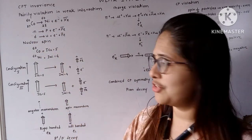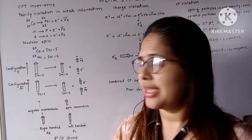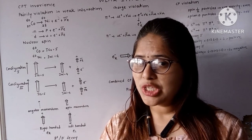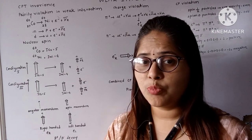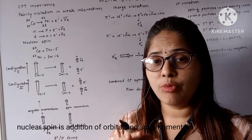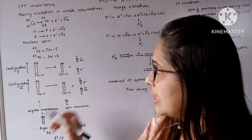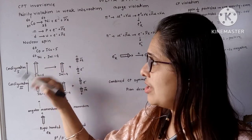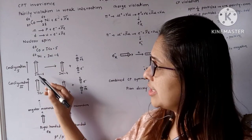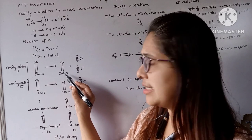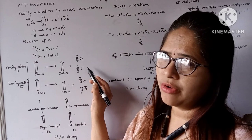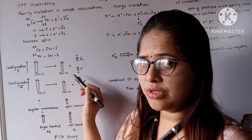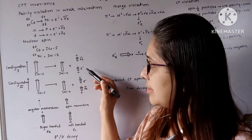This process can be considered as the neutron converting itself to a proton by giving out an electron and electron neutrino, or as the down quark converting to the up quark. Now, nuclear spin corresponds to the total orbital angular momentum of the nucleus. Experimentally, Co-60 has a nuclear spin of 5, whereas Ni-60 has a nuclear spin of 4. The electron and neutrino are spin-half particles — they are fermions.